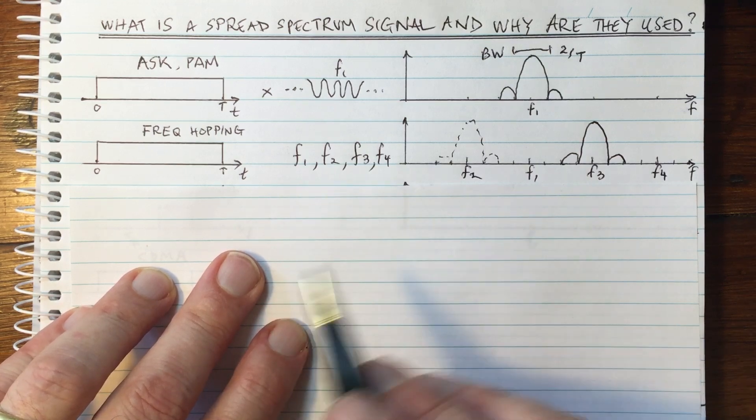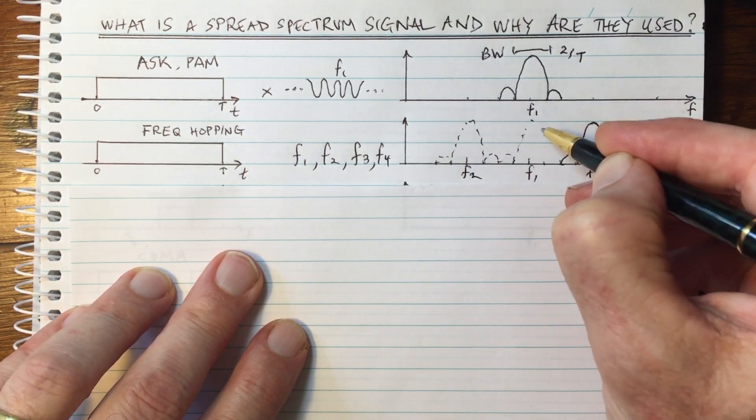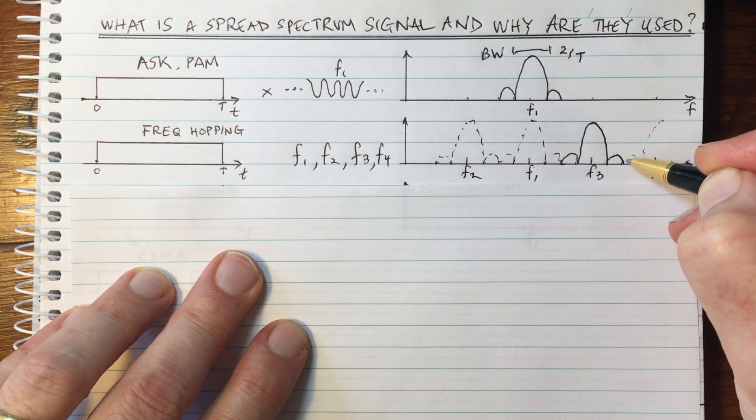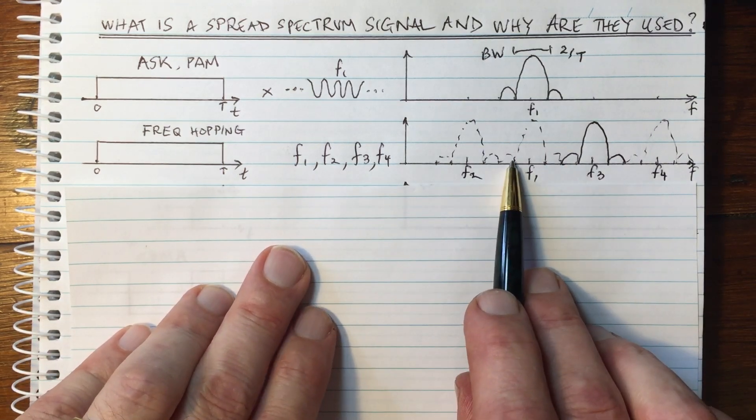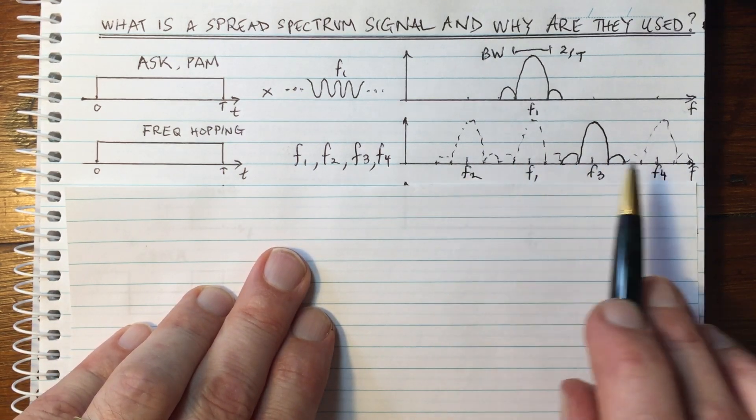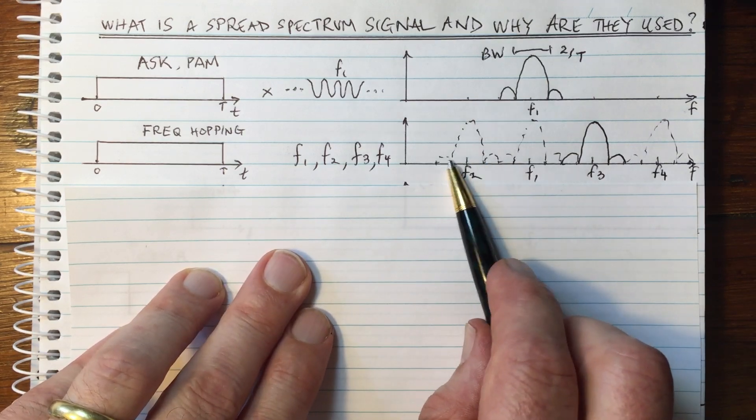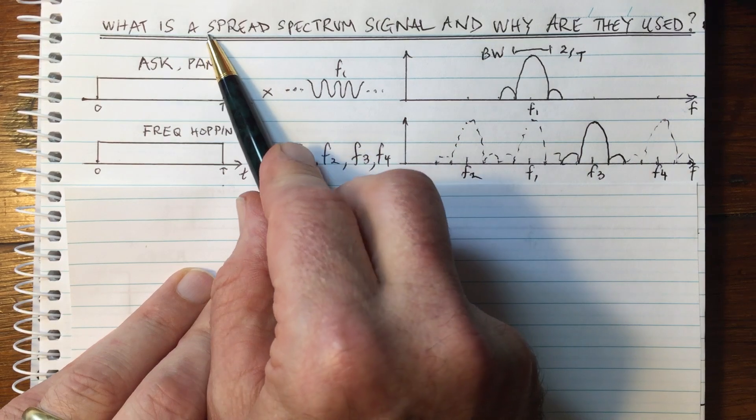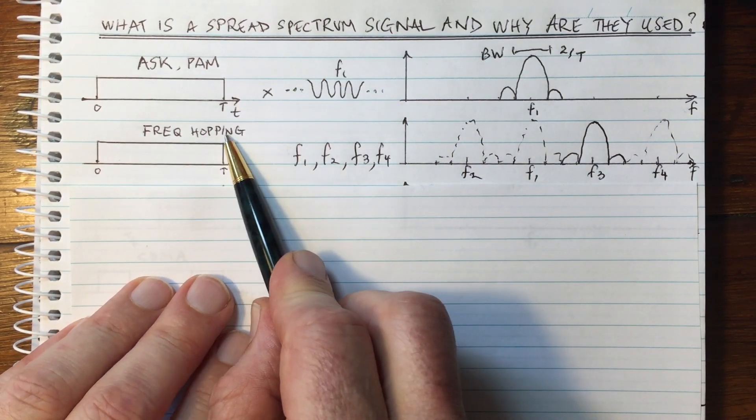And of course, if the next time slot was F1, it would be taking up this amount of frequency. And of course, whenever randomly we jump to F4, then we have this frequency band being used. So at any given time, we're only using one of the carrier frequencies. But over time, we are going to be using the totality of all of this bandwidth. So that is the way we are spreading the spectrum in frequency hopping.